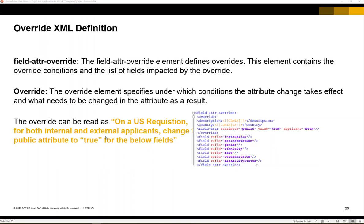An easy example of why we might use an override is social security number. This field, SSN, may only be relevant to US countries. So we can define the field as public equals false, and then depending on the job requisition country — if that is equal to United States — we can decide to change the attribute to make this public equals true. What's really important to remember about overrides is that even when we set public to true, we still also need to have read and write permissions for the candidates in order to be able to see these fields. That is quite a common mistake that we see customers making.